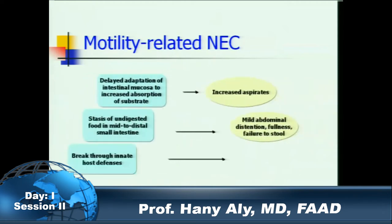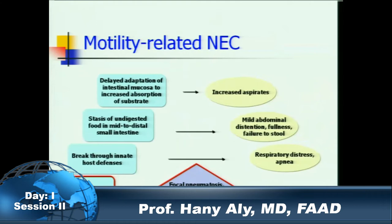The pathogenesis begins with delayed adaptation of the intestinal mucosa for absorption, leading to increased gastric residuals, then stasis of undigested food, abdominal distension, and breakthrough of the host defense. The baby then starts to have respiratory distress and apnea. Finally, breakthrough of the mucosa occurs with toxins released into the system, resulting in metabolic acidosis and DIC.